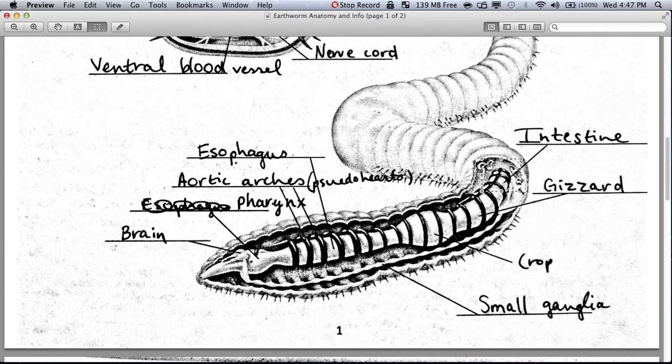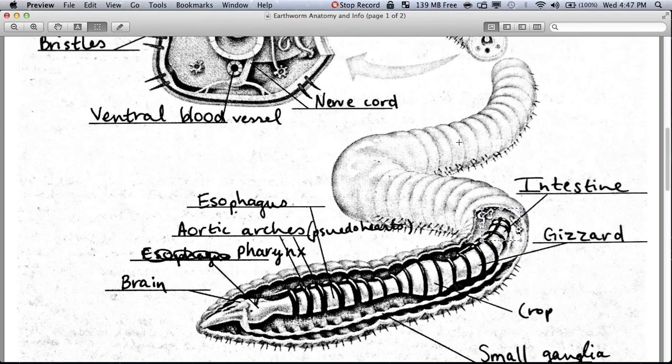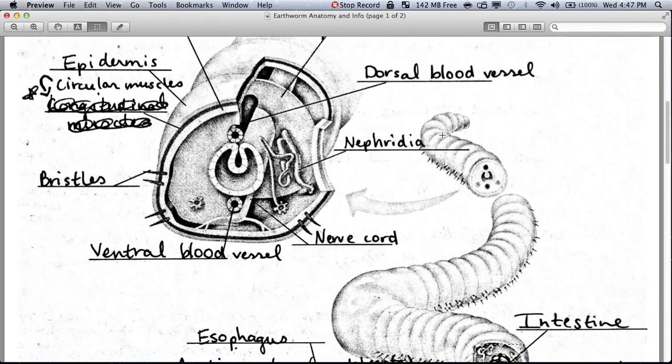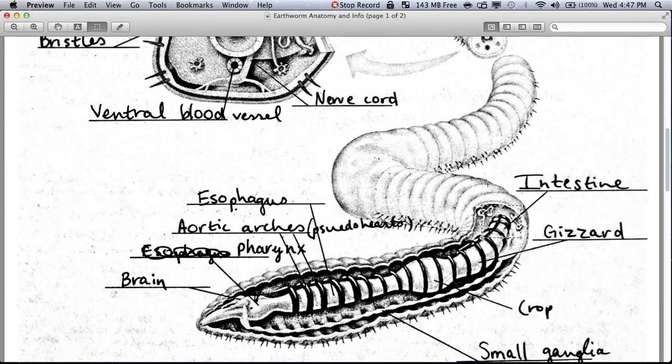Finally, the intestine, which runs the rest of the body. Through here and all the way to its anus, all the way back here, is where the intestine runs. So it's a big intestine compared to the other parts of the digestive canal. But the intestine is in charge of chemical digestion. The gizzard is mechanical digestion, the intestine is chemical digestion.